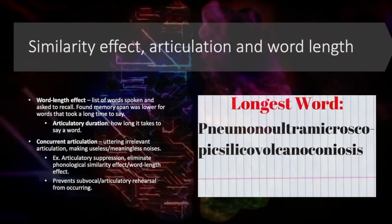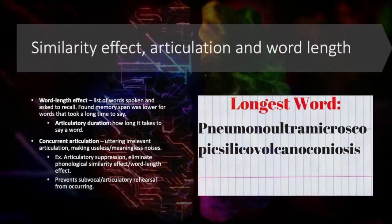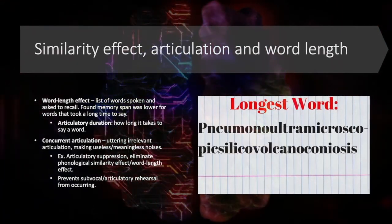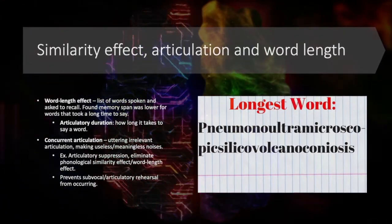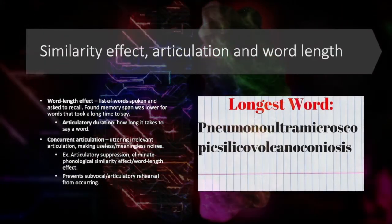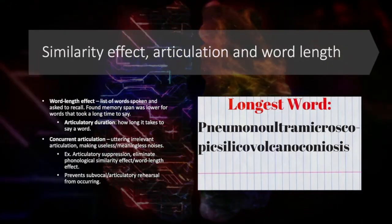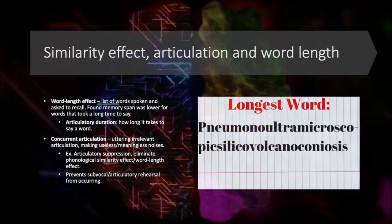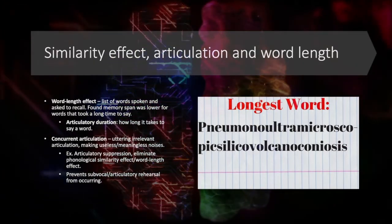Concurrent articulation is when there is irrelevant articulation — making useless, meaningless noises, like gibberish. Articulatory suppression eliminated the phonological similarity effect and also eliminated the word length effect, because it prevented sub-vocal articulatory rehearsal from occurring. So by just saying the same useless noise or phrase, this suppressed the articulatory control process and thus individuals were unable to access that sub-vocal speech.